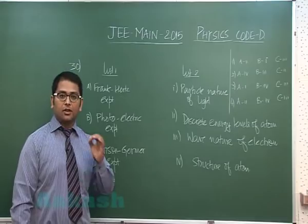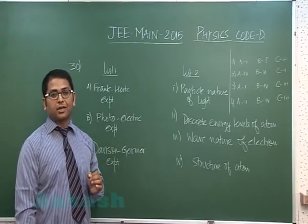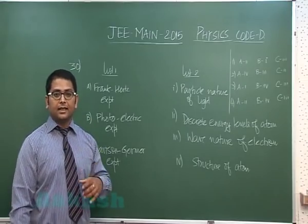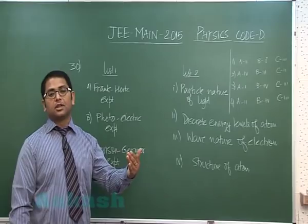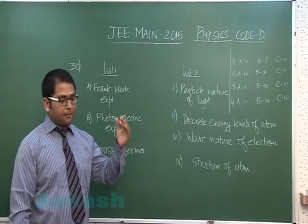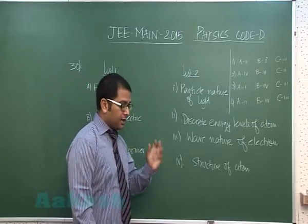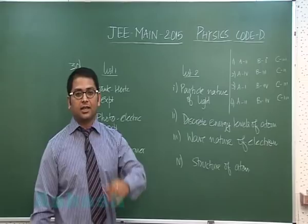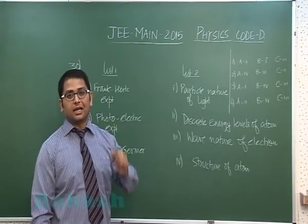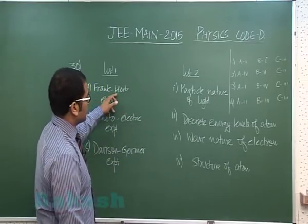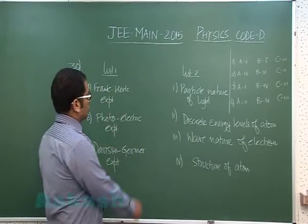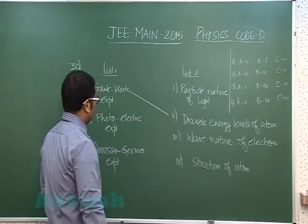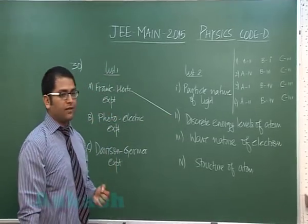They proved through the Frank-Hertz experiment that mercury should have discrete energy levels. So this quite obviously matches to the outcome: discrete energy levels.